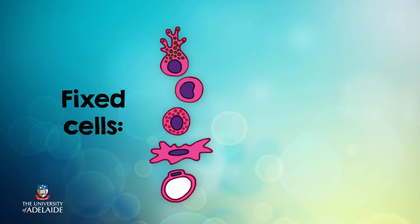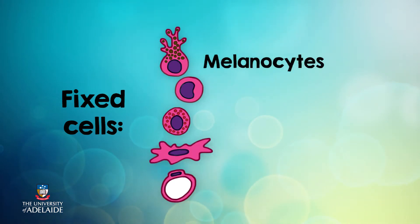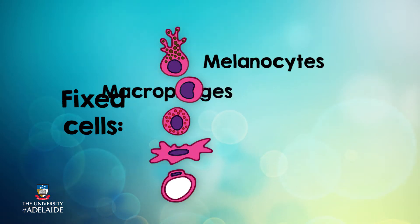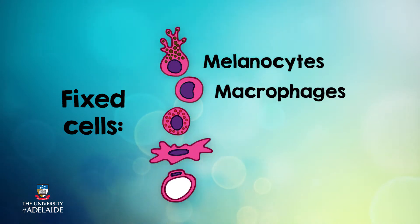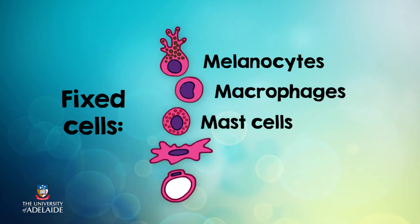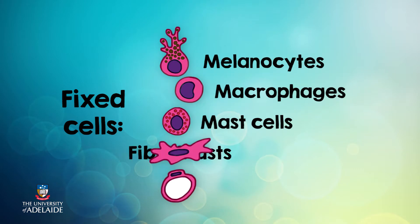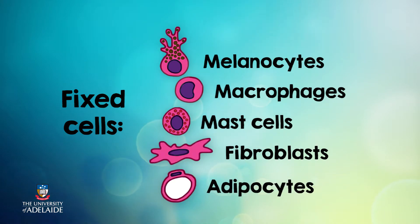Of the fixed cells we have melanocytes, responsible for the production of melanin which gives us a tan and protects us from UV radiation. Fixed macrophages are immune cells that defend the tissue from invading pathogens. Mast cells stimulate local inflammation by releasing histamine — these are the culprits that bring about hay fever. Fibroblasts produce the extracellular fibres, and adipocytes or fat cells store our fatty reserves.